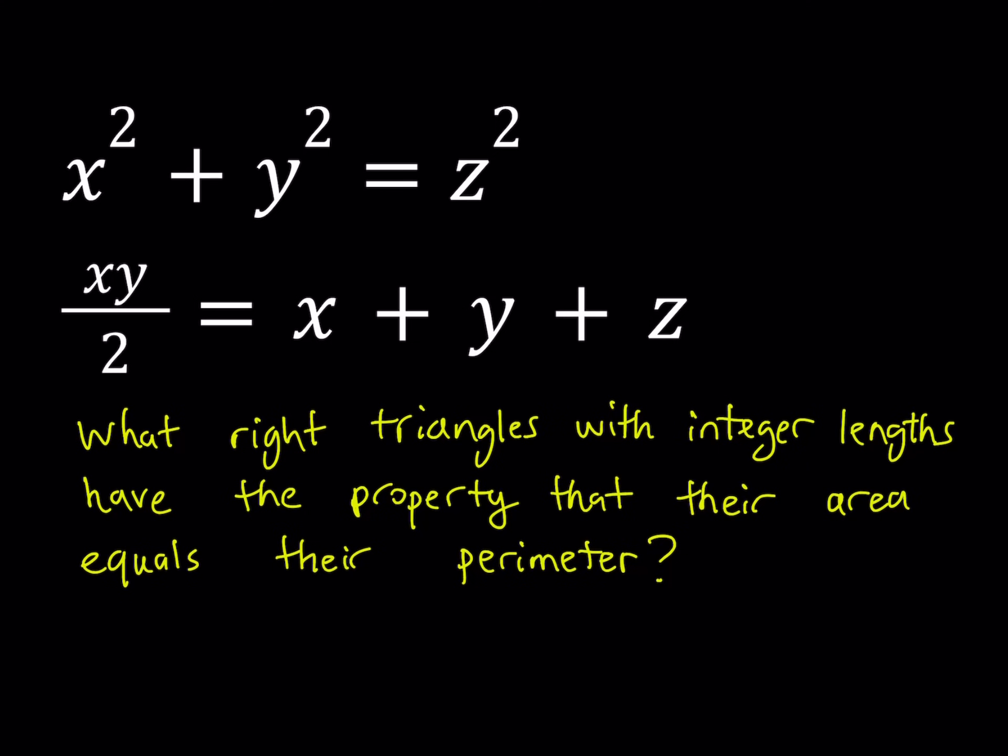So this gives us the following system: x squared plus y squared equals z squared, which is the Pythagorean theorem for legs x, y, and hypotenuse z. And the area of a right triangle with legs x and y is xy divided by 2, and the perimeter is x plus y plus z.